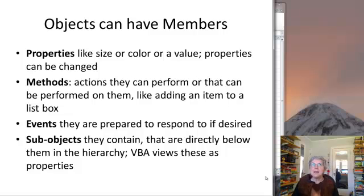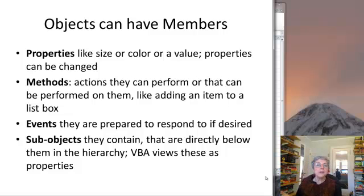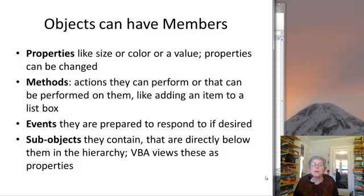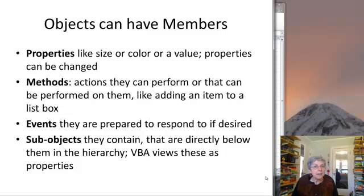Objects have members of different kinds. First there are properties — things like the size, the color, the font, etc. Properties can be changed, though sometimes in the properties window they can be read-only, and sometimes the program can change them. Methods are actions that can be performed by an object — or actions you can perform on the object or make the object perform — and they belong to that object. Then there's a class of events that an object is prepared to respond to, which is another type of member. Finally there are sub-objects that the object contains, and Visual Basic views those as a kind of property.